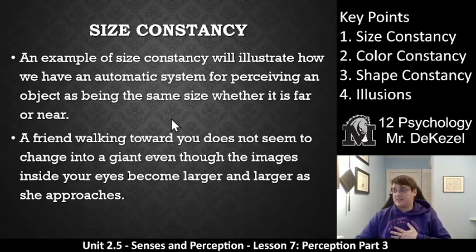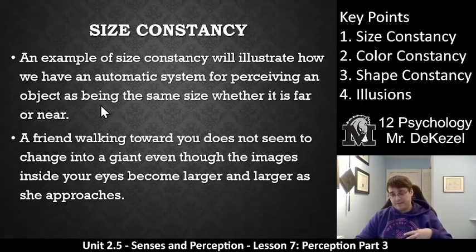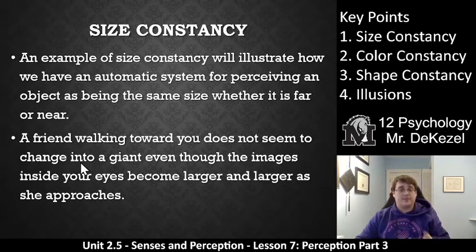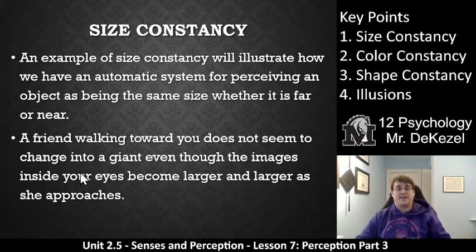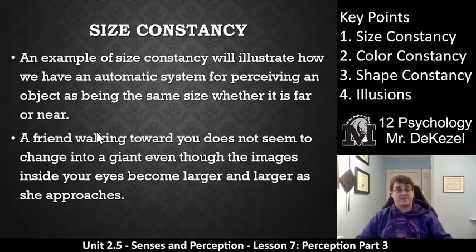Size constancy: an example will illustrate how we have an automatic system for perceiving an object as being the same size whether it's far or near. For example, I know the sizes of my friends, so a friend walking towards me does not instantly change into a giant as they get closer. Even though the images inside my eyes go from small to large, I perceive that person as the same size — not as miniature and then giant. That is size constancy.